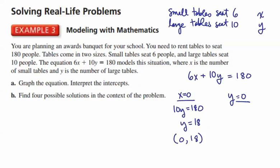When y is zero, along the x-axis, when y is zero, we have the equation 6x is equal to 180. 6 times what is 180? 6 times 30 is 180, and so we have the point 30, 0.